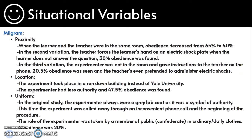Milgram had three situational variables, the first one being proximity. When the learner and the teacher were placed in the same room, obedience decreased from 65% to 40%. In the second variation, the teacher forces the learner's hand on an electric shock plate when the learner does not answer the question, and 30% obedience was found.